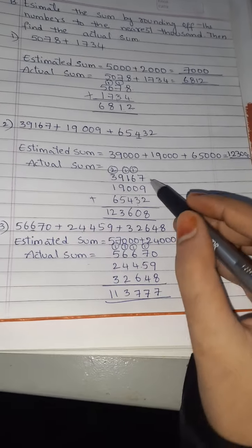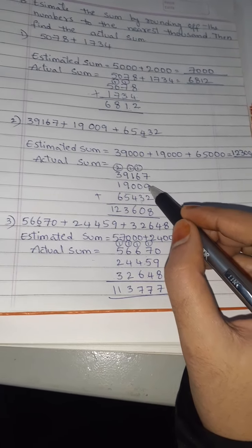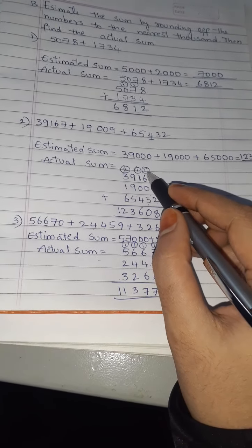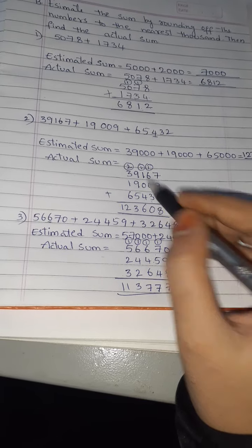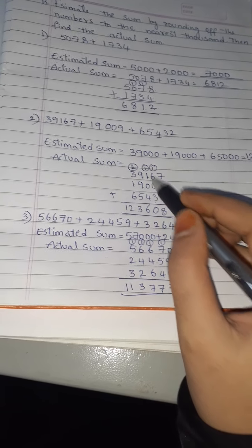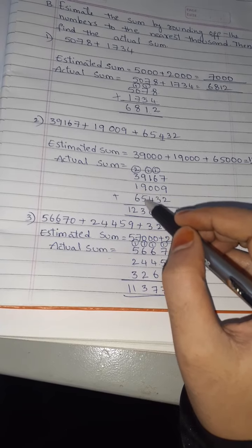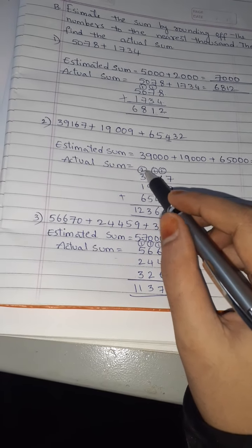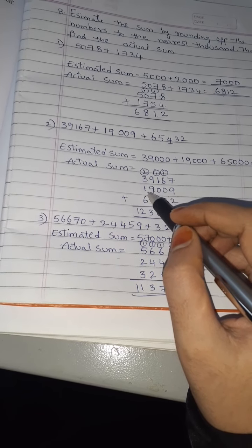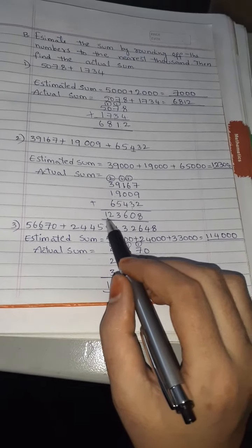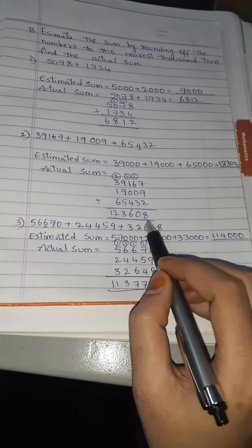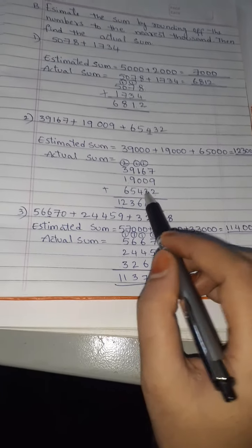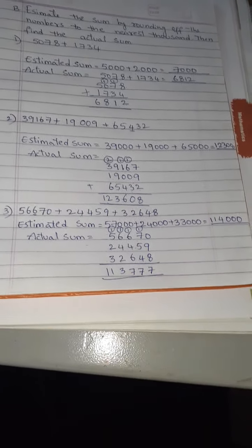Now find the actual sum of 39,167 + 19,009 + 65,432. Write in columns and add: 7+9+2=18, 8 carry 1; 6+0+3+1(carry)=10, 0 carry 1; 1+0+4+1(carry)=6; 9+9+5=23, 3 carry 2; 3+1+6+2(carry)=12, giving one lakh twenty-three thousand six hundred and eight. The actual sum is 1,23,608 and the estimated sum is 1,23,000.